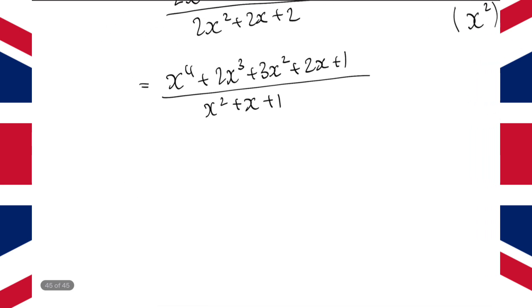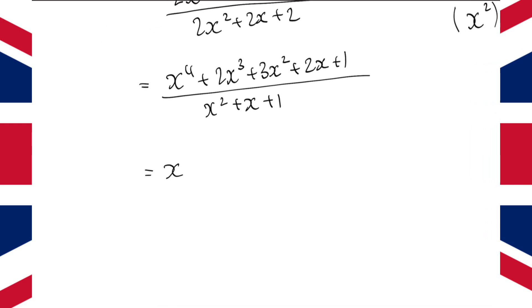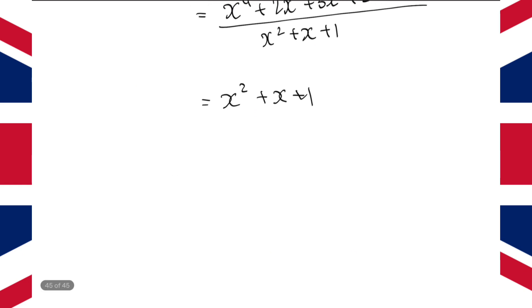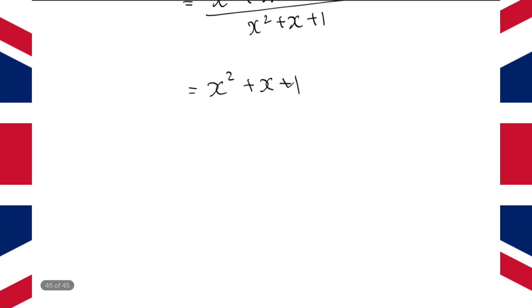So, this turns into x squared plus x plus 1. And now this is a lot easier to work out. We said that x was 2007. So, undoing the substitution, we're going to get 2007 squared plus 2007 plus 1.